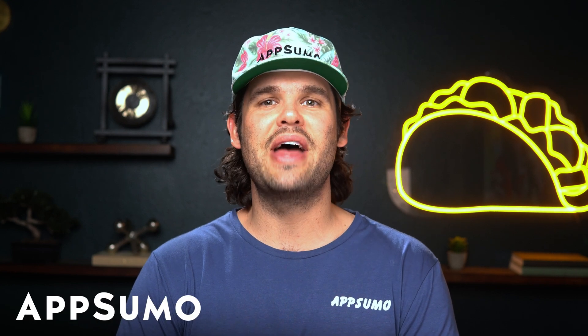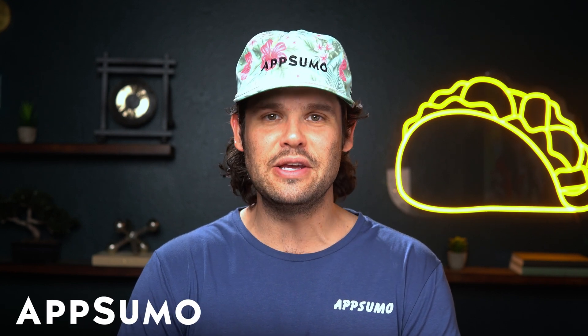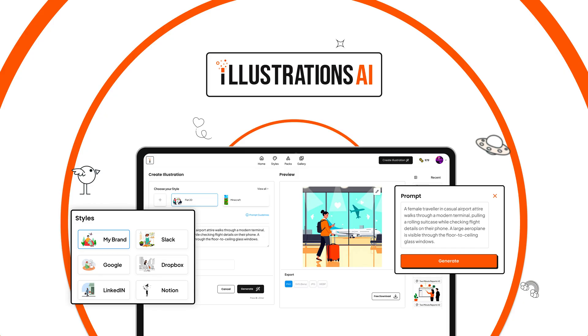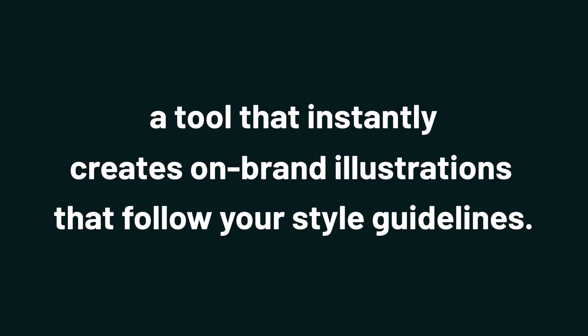What's up, Sumo-lings? I'm Jay with AppSumo, the best place to get insane deals on business software. And today we're checking out Illustrations AI, a tool that instantly creates on-brand illustrations that follow your style guidelines. If you're tired of endlessly scrolling through stock sites trying to find the right illustrations that actually fit your brand, then you need Illustrations AI.